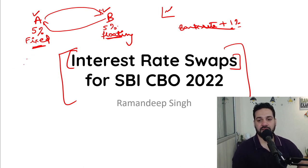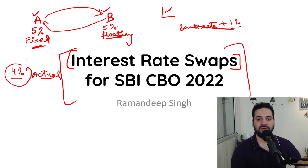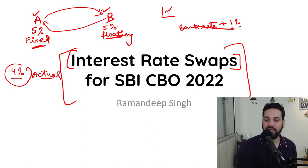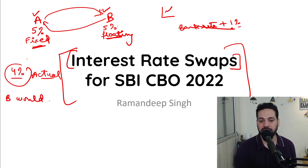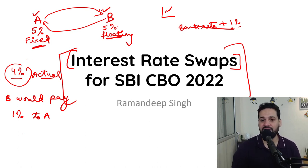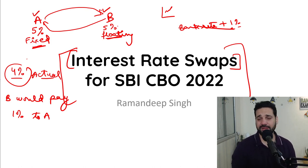Company A is looking for a floating rate of interest. Because of the agreement, there is a 1% charge. Company B was looking for fixed. B needs to pay 5% but the actual rate is 4%, so B would pay that 1% difference to A. On the opposite side, if the interest rate rises, then A would pay. That's how the swap works.